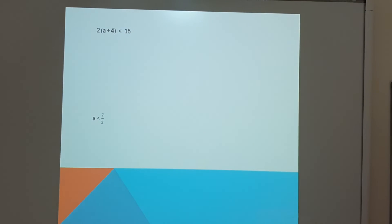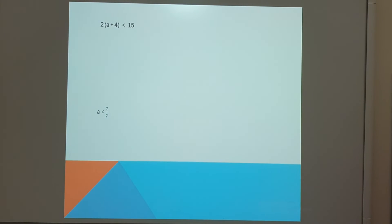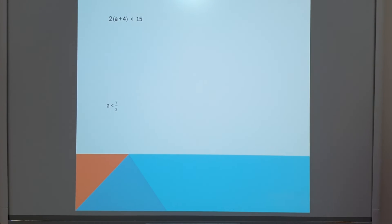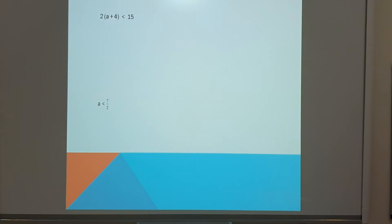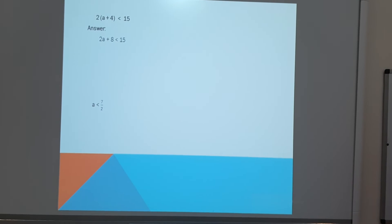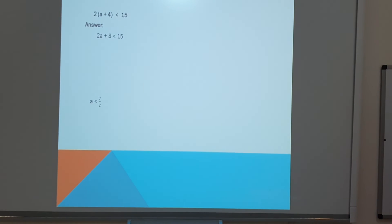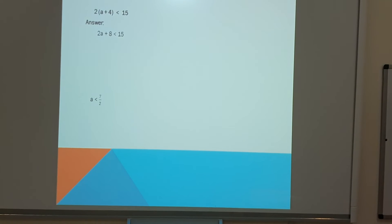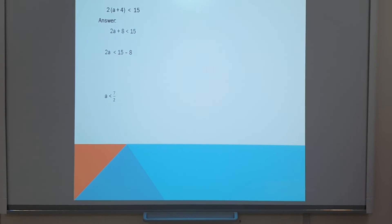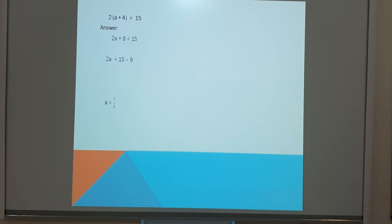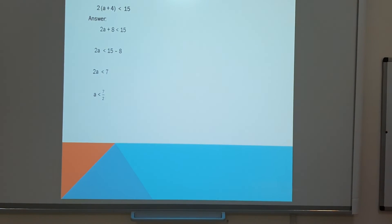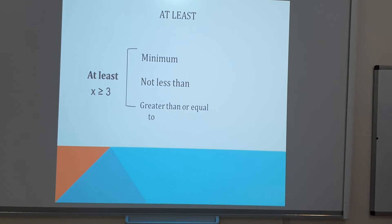Our next question is 2 bracket of a plus 4 is less than 15, which means 2 multiplied by (a plus 4). First, expand the bracket: 2 times a is 2a, plus 2 times 4 is 8, so 2a plus 8 is less than 15. Keep 2a on the left side, bring 8 to the right: 15 minus 8 is 7. So 2a is less than 7, and a is less than 7 over 2.